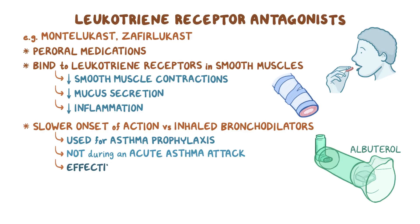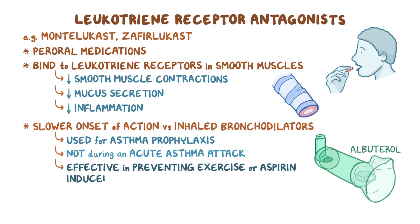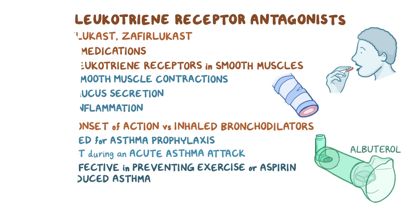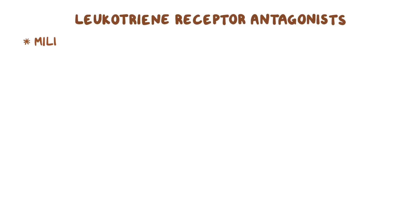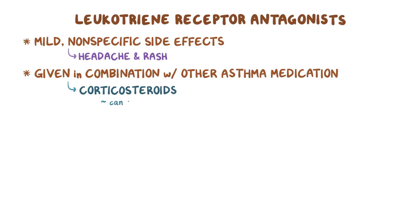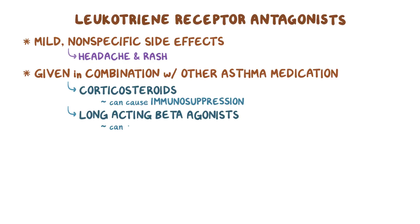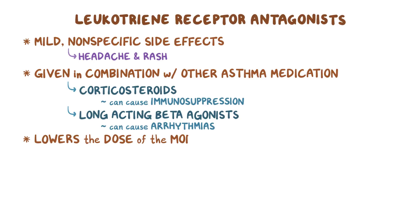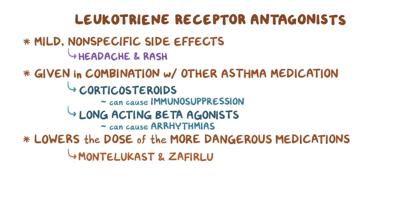They are especially effective in preventing exercise- or aspirin-induced asthma. Since leukotriene receptor antagonists have mild, nonspecific side effects like headache and rash, they're given in combination with other asthma medications like corticosteroids, which can cause immunosuppression, and long-acting beta agonists, which can cause arrhythmias. This will lower the necessary dose of these more dangerous medications, which makes montelukast and zafirlukast great supportive medications.